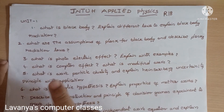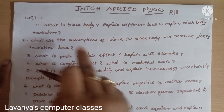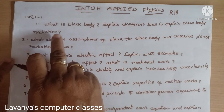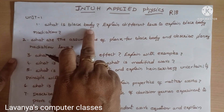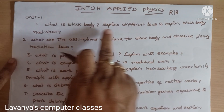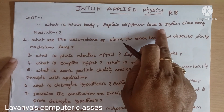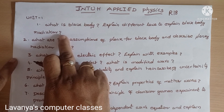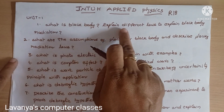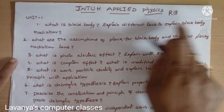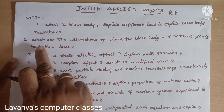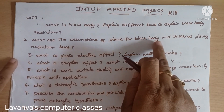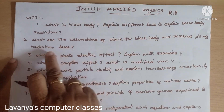Unit 1 important questions: First, what is a black body? Explain the different laws to explain black body radiation. Second question: what are the assumptions of Planck for black body and describe black body radiation laws?